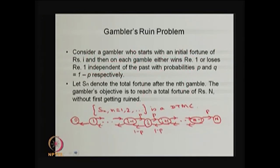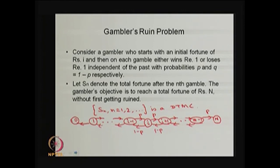With this example, I move to the next example: a reducible Markov chain that is also a special case of a random walk. This is called the Gambler's Ruin problem. Consider a gambler who starts with an initial fortune of i rupees, and on each gamble either wins rupee 1 or loses rupee 1, independent of the past, with probabilities p and 1 minus p respectively.